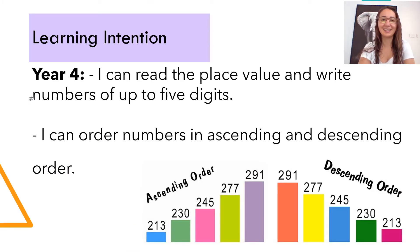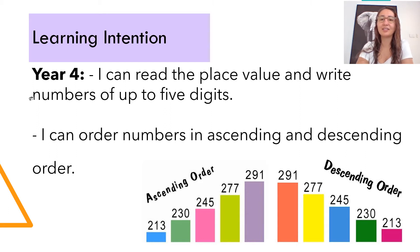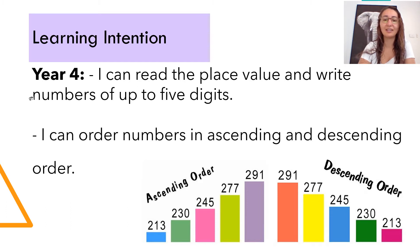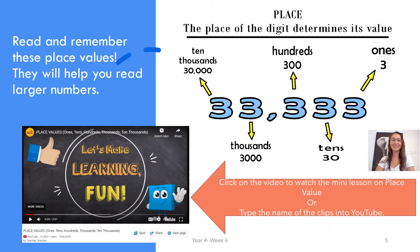Let's get started. Our learning intention for Monday's lesson: I can read the place value and write numbers of up to five digits. When we say five digits, this is going into the ten thousands. I can order numbers in ascending and descending order. This is something that we've touched on this year, and ascending order is from smallest to largest. Descending order is from largest to the smallest amount.